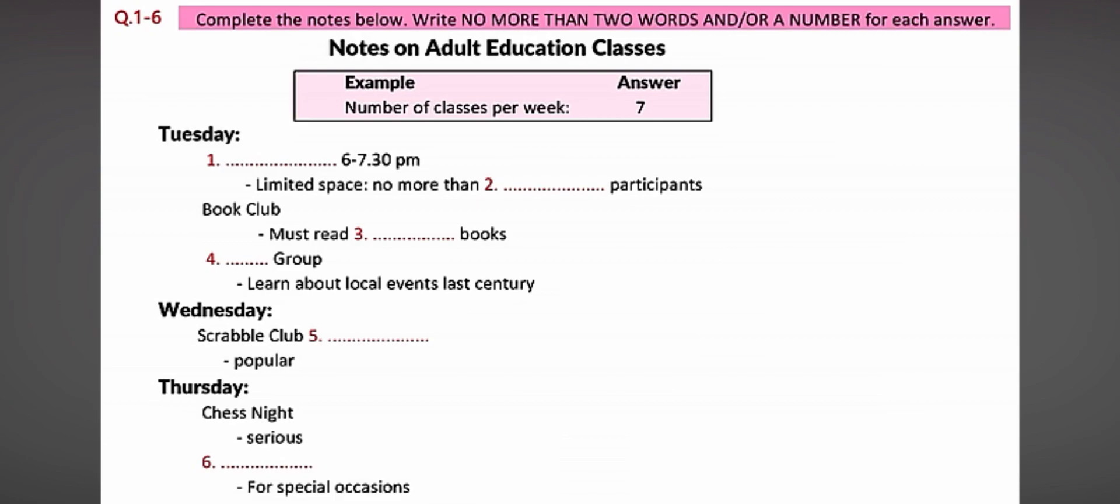Good afternoon, Estelle speaking. What can I do for you? I was told that the school holds adult education classes. Yes, it does. We run seven a week, three on Tuesdays and Thursdays and one on Wednesdays. The receptionist, Estelle, says the school holds seven classes a week, so seven has been written in the space.